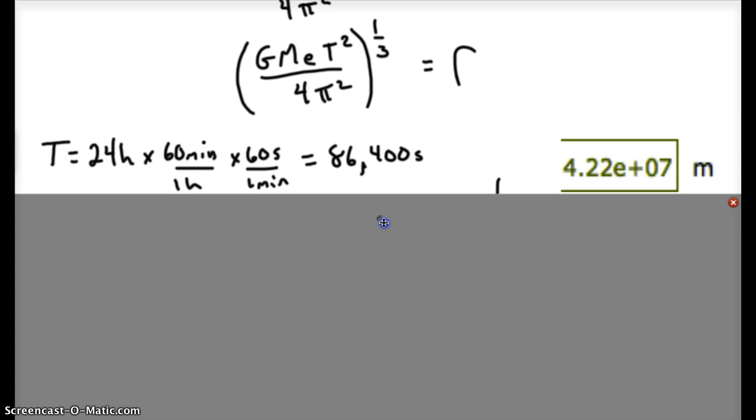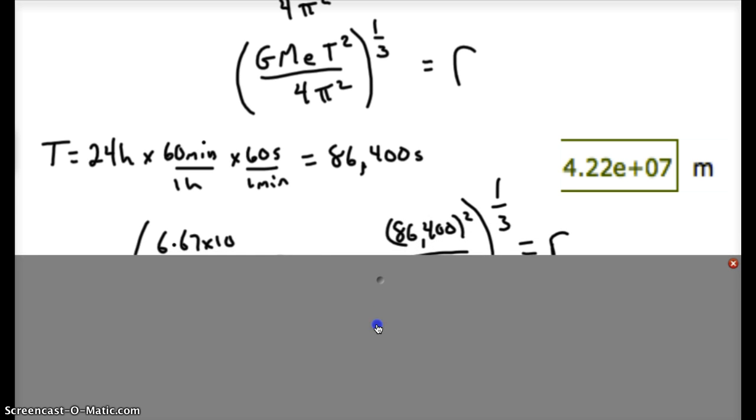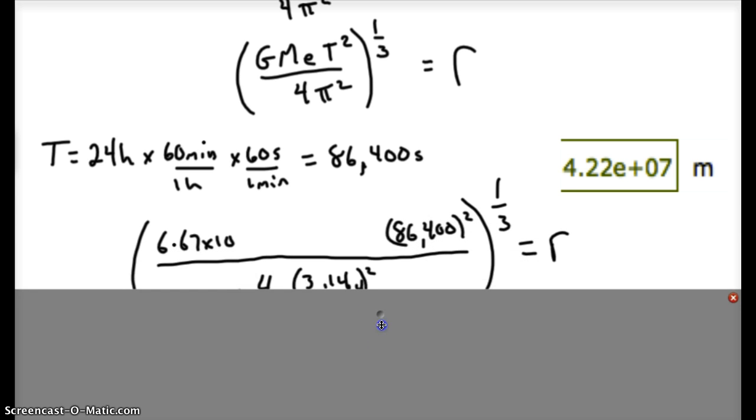We'd have to convert the period, 24 hours, into seconds. That works out to 86,400 seconds. And then you want to practice using this on your calculator because there's a lot of powers squaring and a lot of places to go wrong.